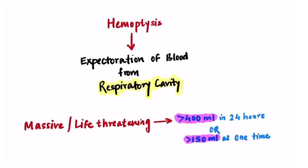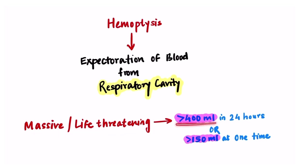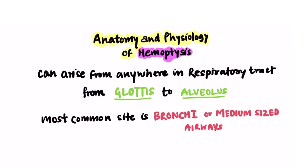Hemoptysis is the expectoration of blood from the respiratory cavity — that is, the source of blood is the respiratory tract. It is considered massive or life-threatening if the amount is more than 400 ml in 24 hours, or more than 150 ml at one time.